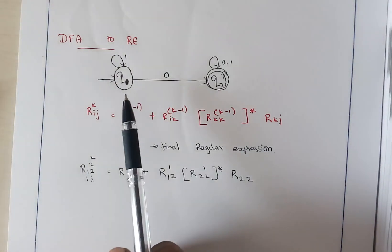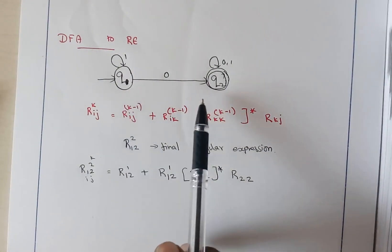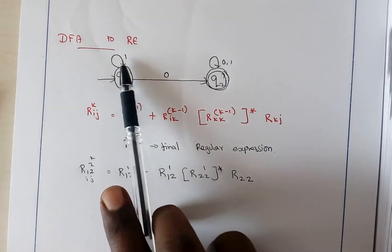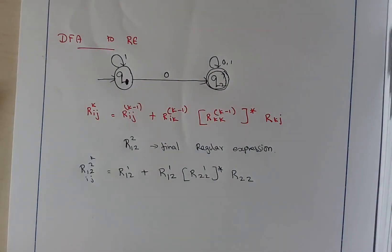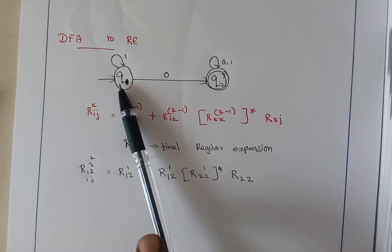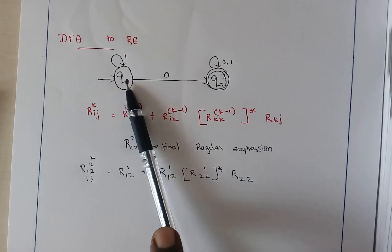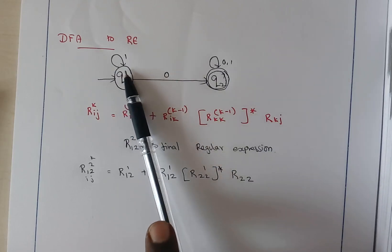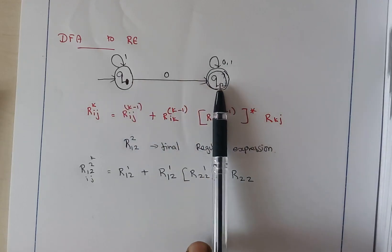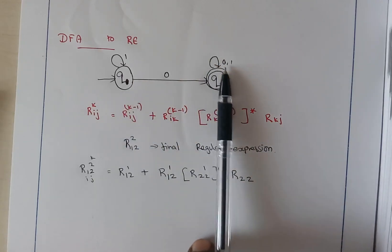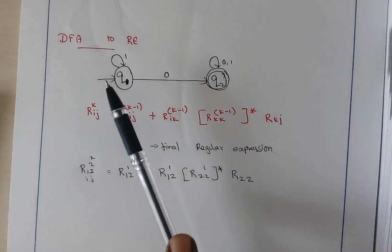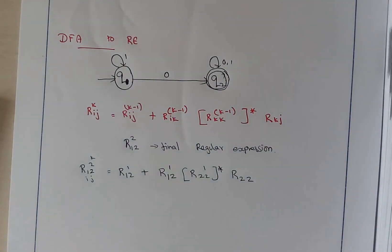Here we have considered a DFA where Q1 and Q2 are the states. Q1 is the starting state, Q2 is the final state, and from each and every state on each and every input symbol we have a transition. The language accepted by this DFA is when the input contains at least one zero — you can have any number of ones, but if there is a zero, from the starting state we can have a transition to the final state.